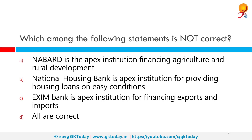Which among the following statements is not correct? All of these statements are correct. NABARD (National Bank for Agriculture and Rural Development) is an apex development financial institution in India, headquartered in Mumbai with regional offices all over India. National Housing Bank (NHB) is a wholly owned subsidiary of the Reserve Bank of India, set up on 9 July 1988 under the National Housing Bank Act 1987, and is an apex financial institution for housing. Export-Import Bank of India (Exim Bank) was established in 1982 under the Exim Act 1981 and has been a catalyst in the promotion of cross-border trade and investment.